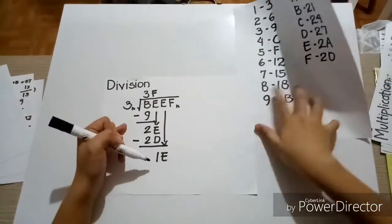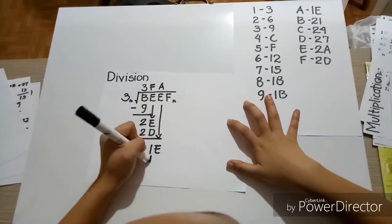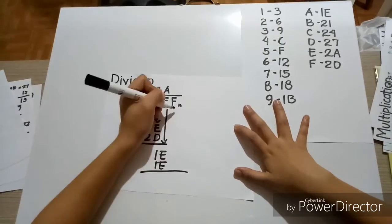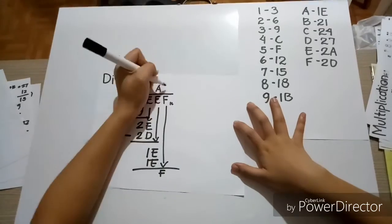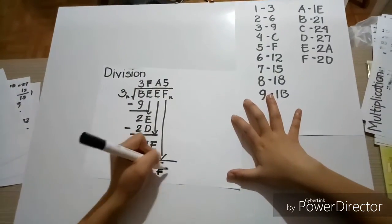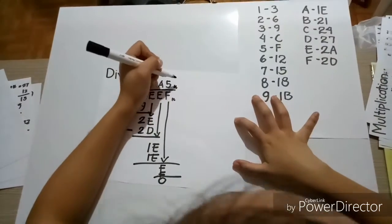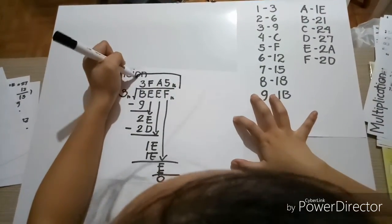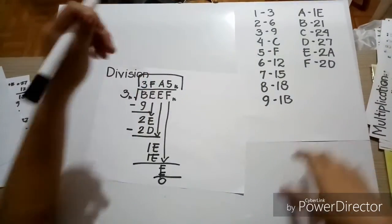So, how many times is 3 into 1E? In here, it is A times, so we'll write A. And A times 3 is equal to 1E. Okay, 0. So, let's go into F, which is F. How many times is 3 into F? It's 5 times, so we'll write 5. And 5 times 3 is equal to F. And this would be the final answer, 3FA5 base 16. Thanks very much. Thank you for watching.